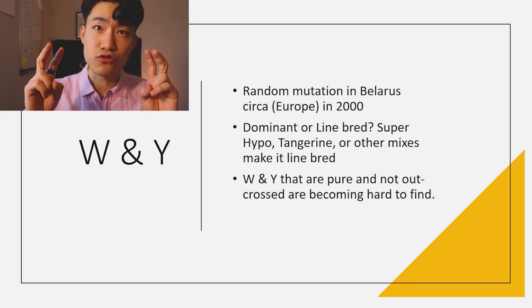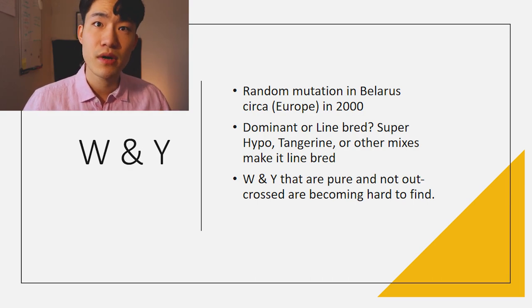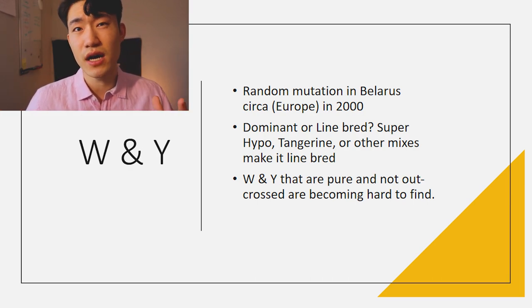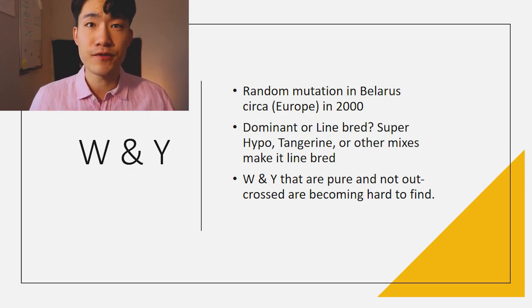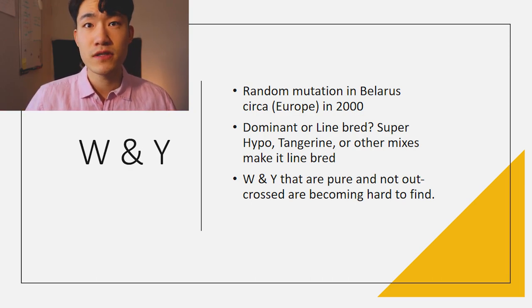That's why some breeders call it linebred. But originally, from information I found online, WY is dominant when it comes to just the pure WY, which is almost impossible to find nowadays in the market because a lot of breeders who work with WY tend to have some kind of mixed genetics. Based on the information I've collected, I think it is dominant — but if you're working with it and know it's polygenetic, let me know in the comments. I am now working with WY starting this year, so I'll be updating you guys when I produce hatchlings.